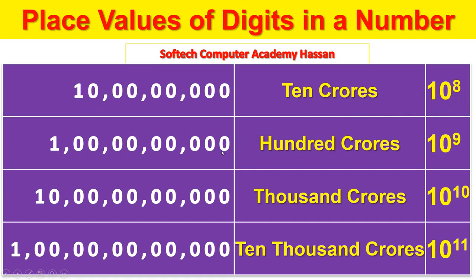Ones, tens, hundreds, thousands, ten thousands, lakhs, ten lakhs, crores, 10 crores — that is 10 to the power of 9.